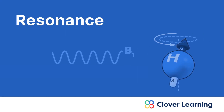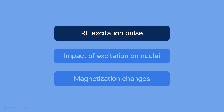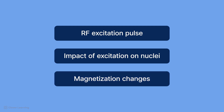Hey everybody, welcome to today's lesson on the basic principles of MRI. This lesson focuses on resonance, which is the phenomenon that allows us to see the MRI image — it is the resonance in magnetic resonance imaging. This lesson also discusses the radio frequency, or RF excitation pulse, the impact of the RF excitation pulse on the hydrogen nuclei, and how the magnetization changes when the hydrogen nuclei are exposed to an RF excitation pulse.